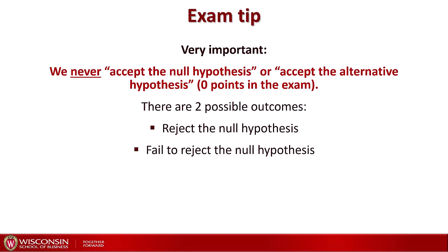Here is something very important for the exam because a lot of students lose points on this: we never say that we accept the null hypothesis or that we accept the alternative hypothesis — that results in zero points for the whole question. There are two possible outcomes for hypothesis testing. The first is that we have enough evidence to reject the null hypothesis. The other outcome is that we don't have enough evidence and we fail to reject the null hypothesis. We don't know in that case if the null hypothesis is true or false — we just failed to show that it was false.